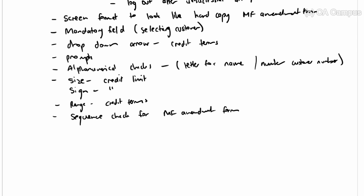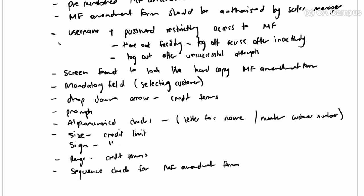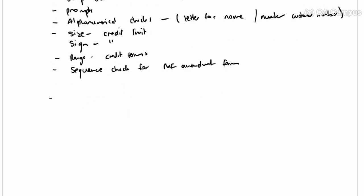For output controls: there could be an exception report for where someone with an incorrect username or password attempted to access the master file. There should also be a log of all the changes that were actually made — specifically a log of all master file amendments made for adding customers.